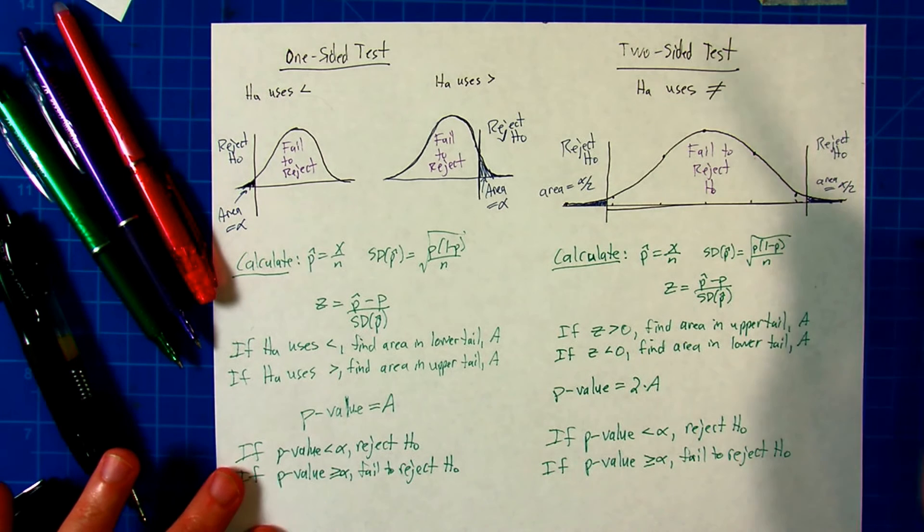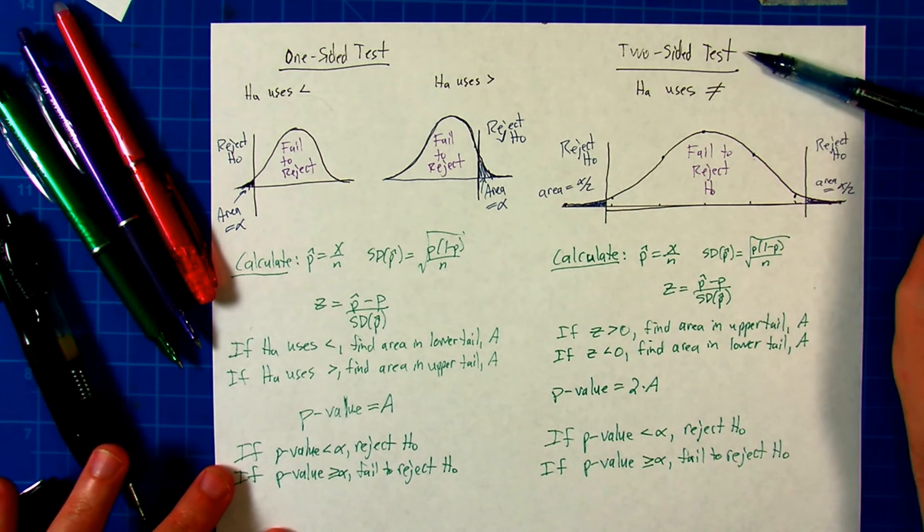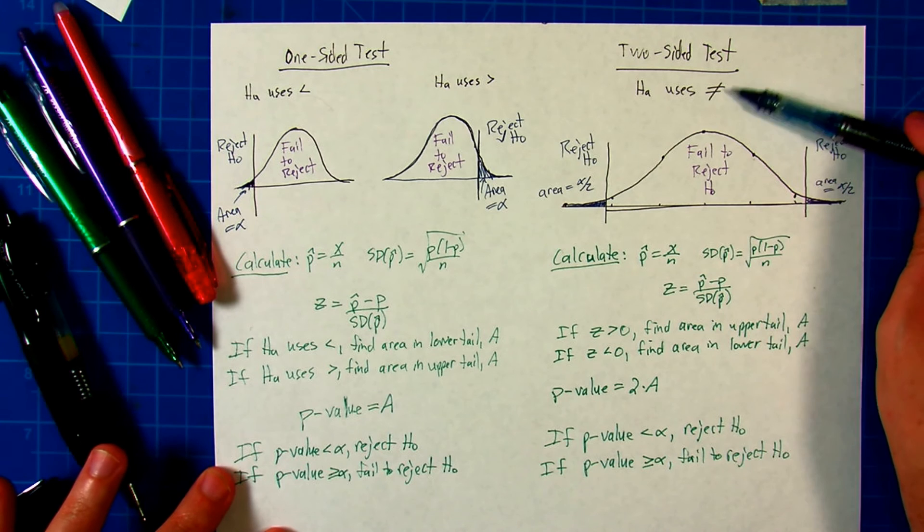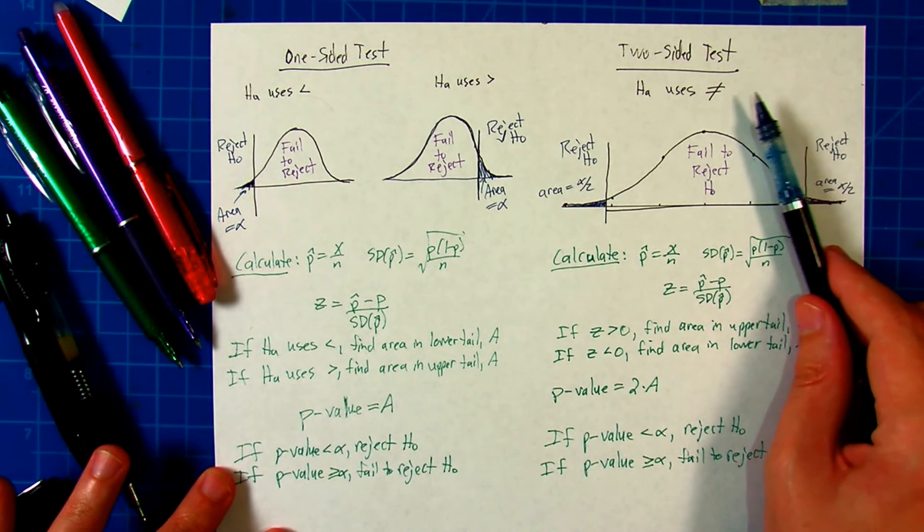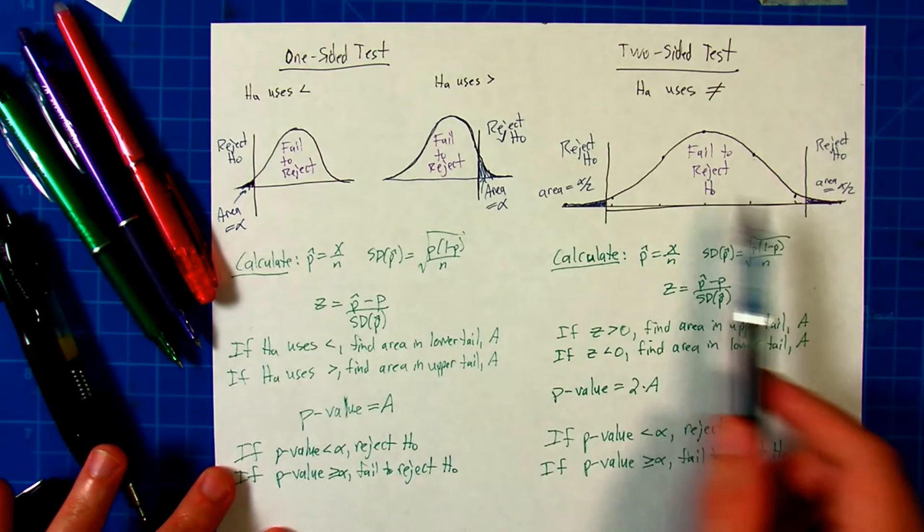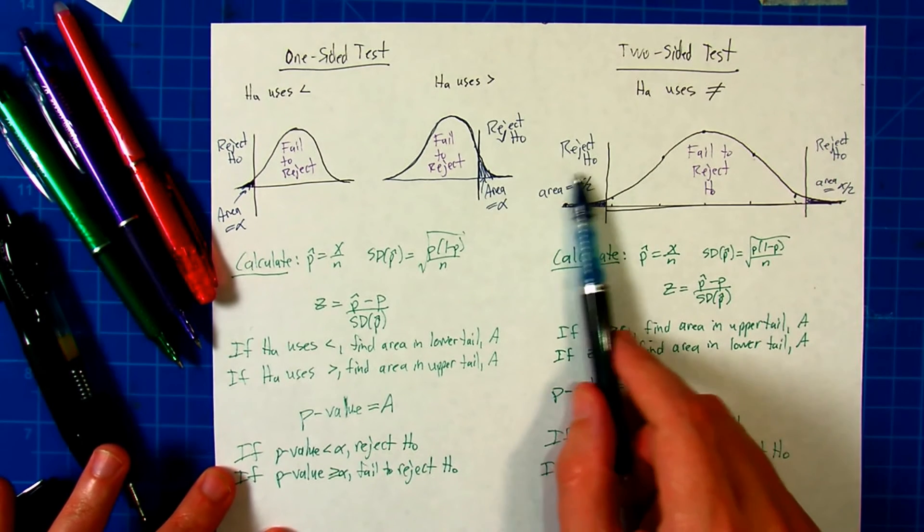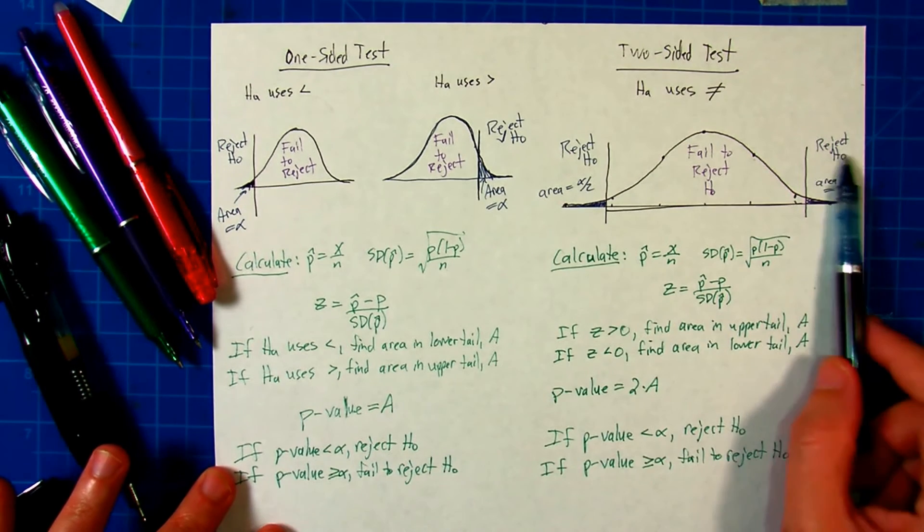Now, a two-sided test is similar, but it's different enough to cause problems. In a two-sided test, your alternate hypothesis uses not equal to. So you don't really concern yourself with whether it's strictly less than or greater than. You say, we're going to reject the null hypothesis if we're too far down in the normal model or too far up in the upper tail.